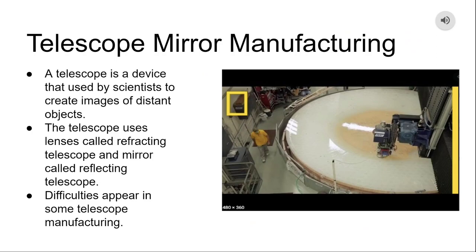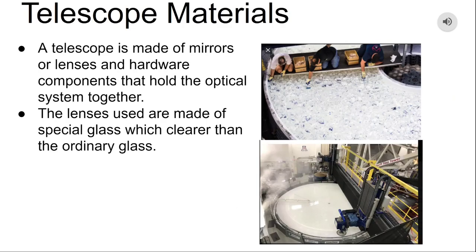Here we talk about telescope mirror manufacturing. A telescope is a device used by scientists to create an image of distant objects. The most familiar is the optical telescope that uses a series of lenses to focus on the light. Telescopes using lenses are called refracting telescopes and those using mirrors are called reflecting telescopes. Difficulties might appear in some telescope manufacturing processes. A telescope is made of mirrors or lenses and hardware components that hold the optical system together. The lenses used are made of special glasses which are clearer and purer than ordinary glass.